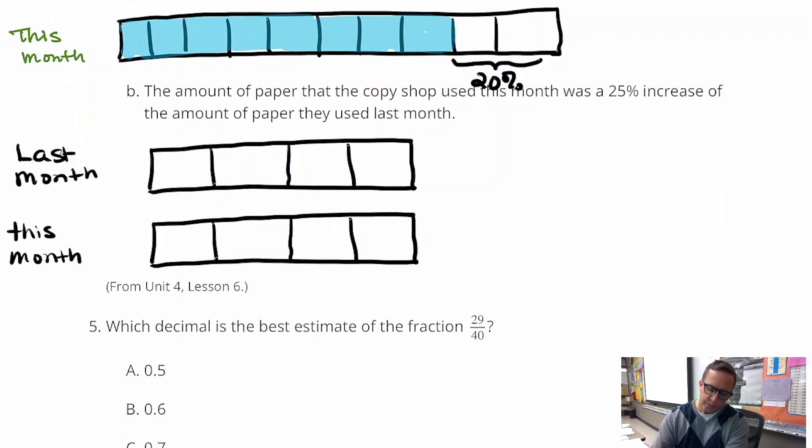I just did a copy and paste there of the new one. That's this month. And so what are we going to do here? I don't think I necessarily have to make a dash, but I'm going to do that. So right there, that represents 25% increase.